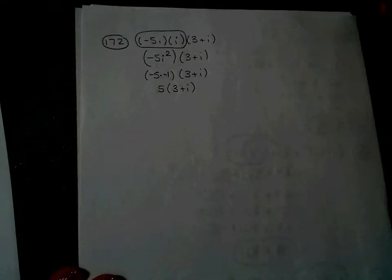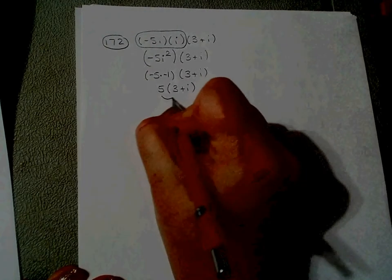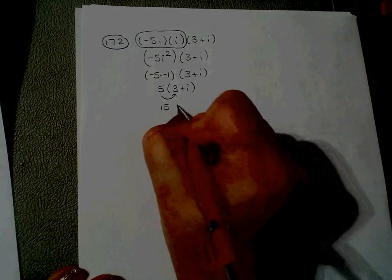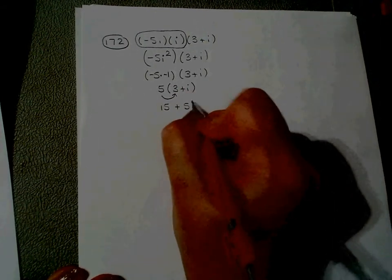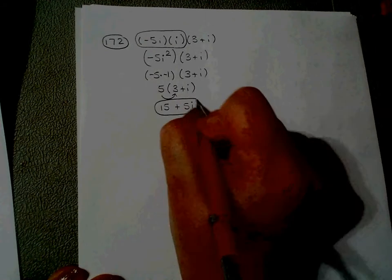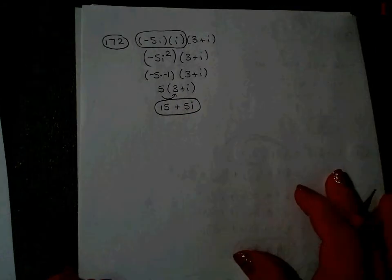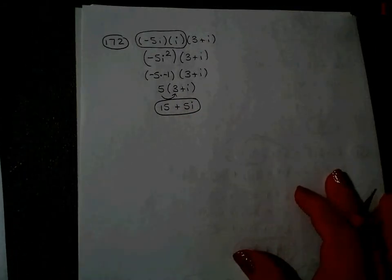So now it's simply a distributive problem. I'm going to distribute 5 to 3 plus i. 5 times 3 is 15. 5 times i is 5i. My final answer, it's written in the right shape, is 15 plus 5i.